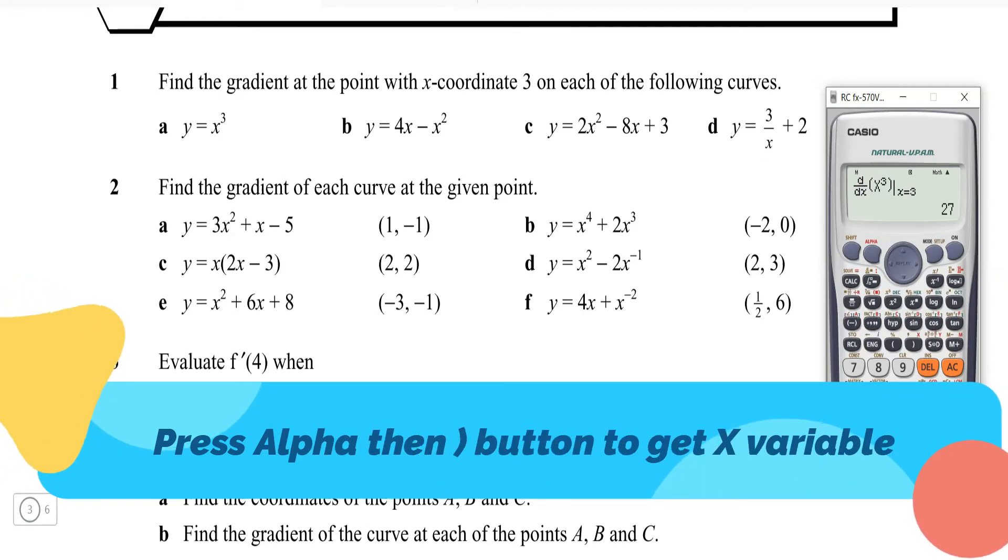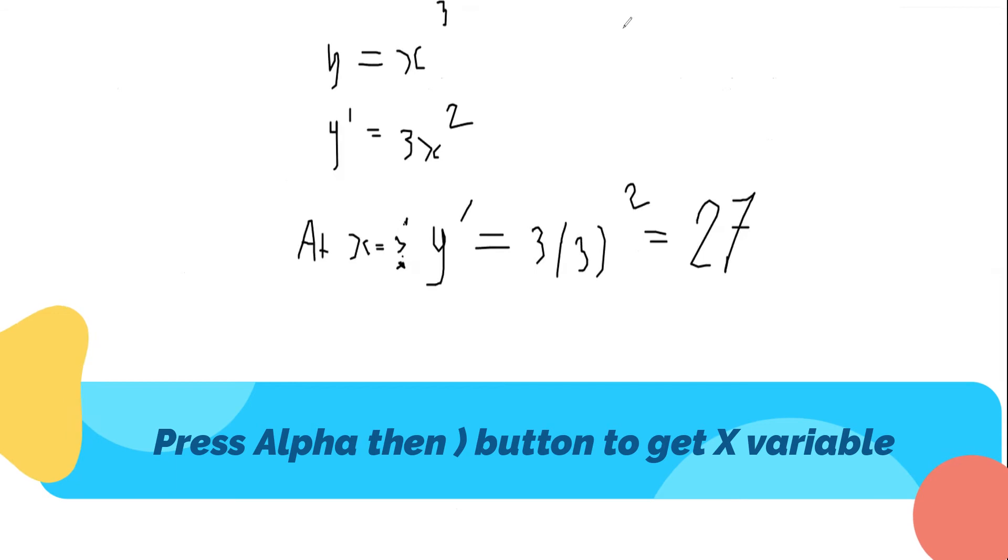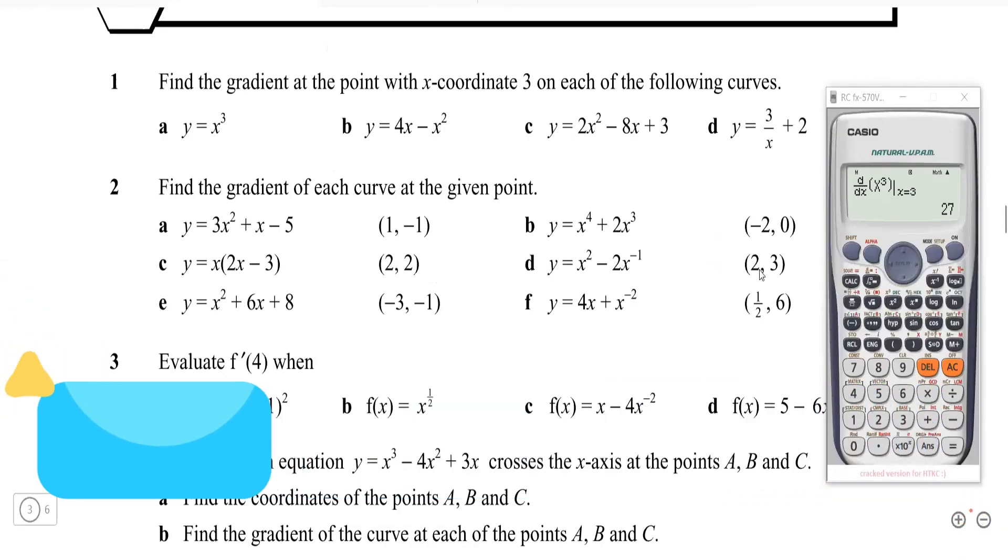Press 3 then you hit equal, 27. We just got 27, we know that the gradient was 27. Nice! So that's how you use your calculator to find a gradient at a point.